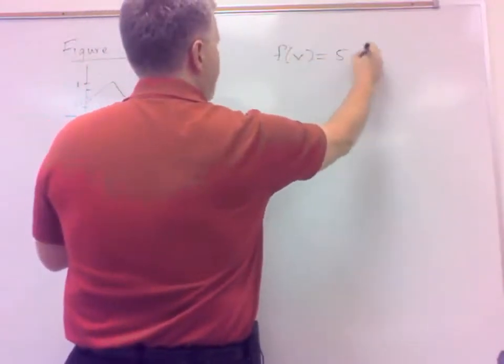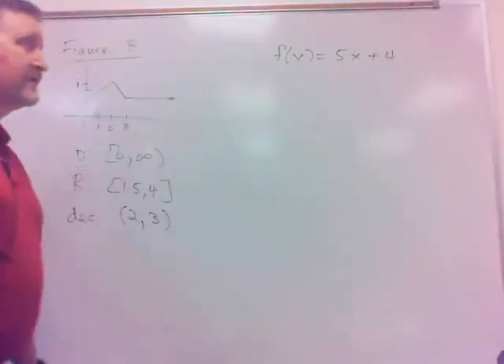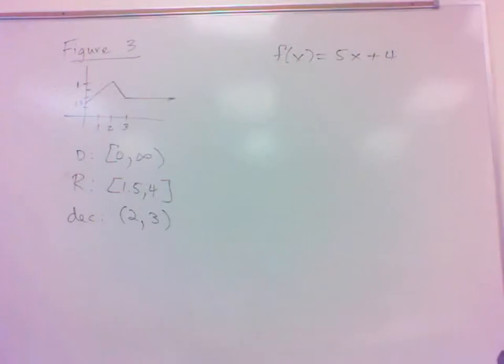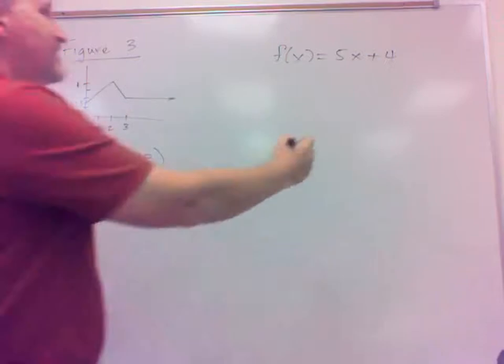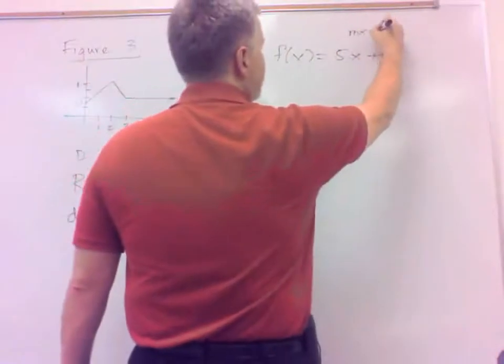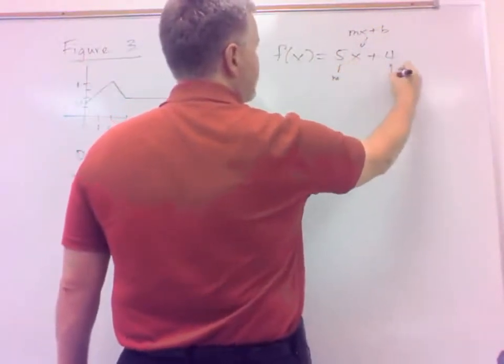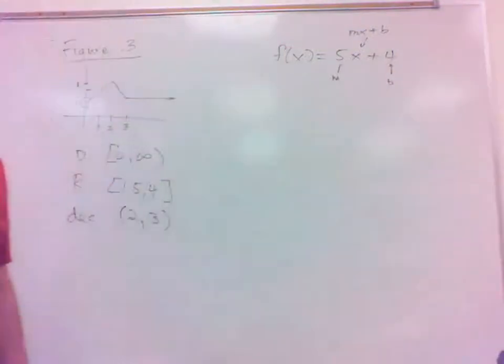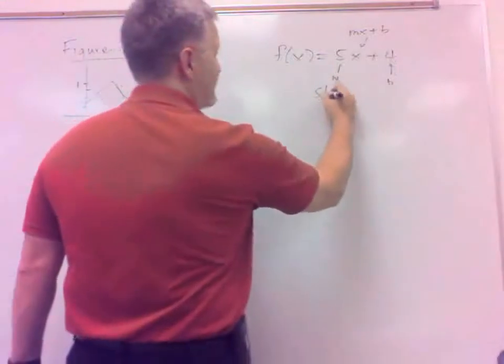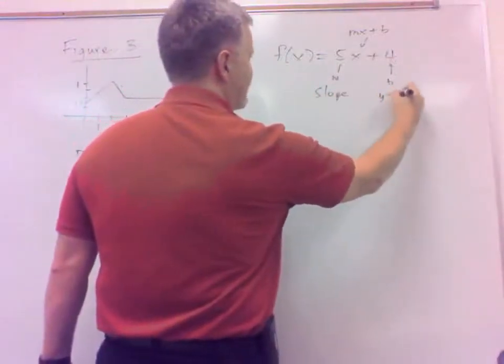f of x equals 5x plus 4. You know, in function form, a line, it's mx plus b, right? This is the m. This is the b. What does m and b mean? We've got ourselves a line. It's linear. The m is slope, and the b is y-intercept.